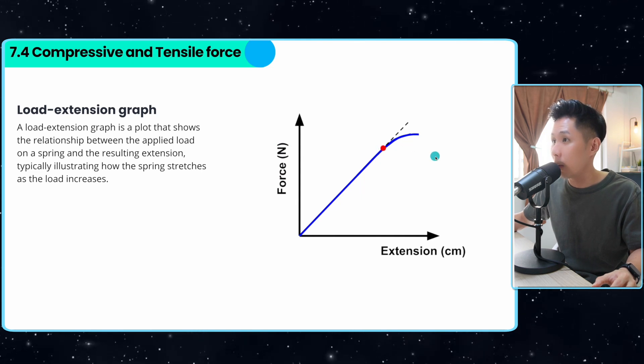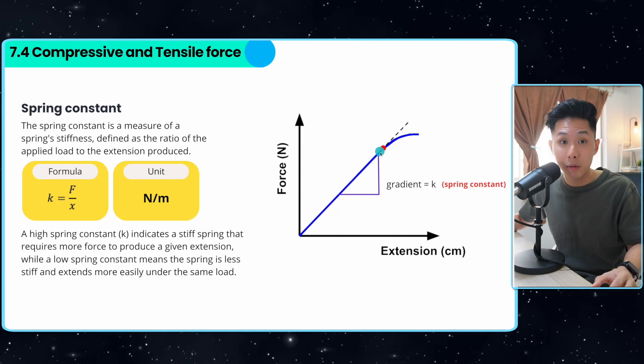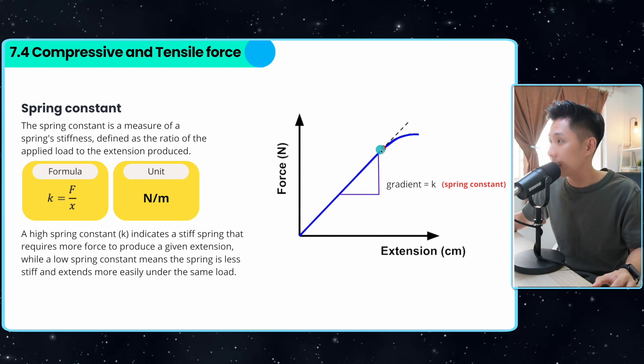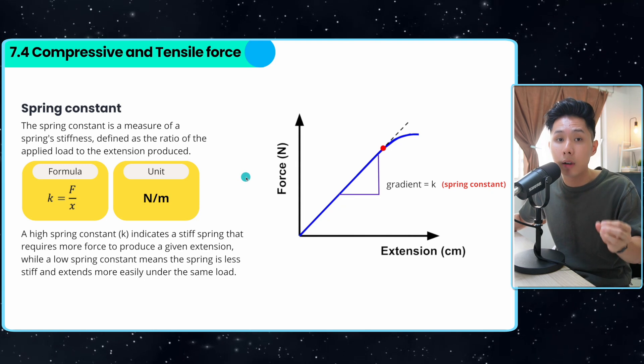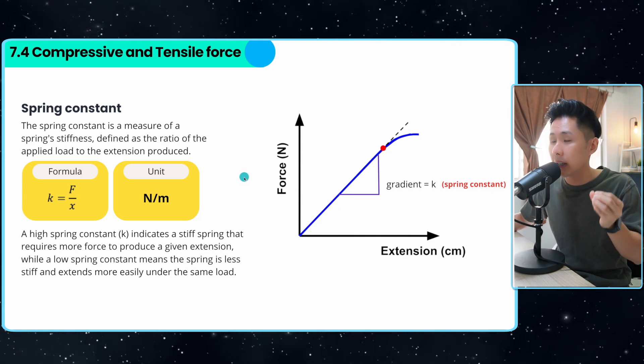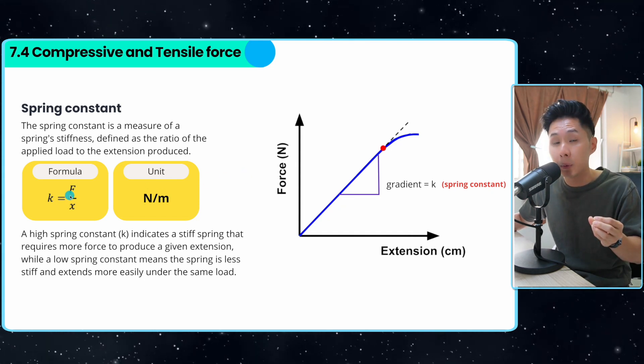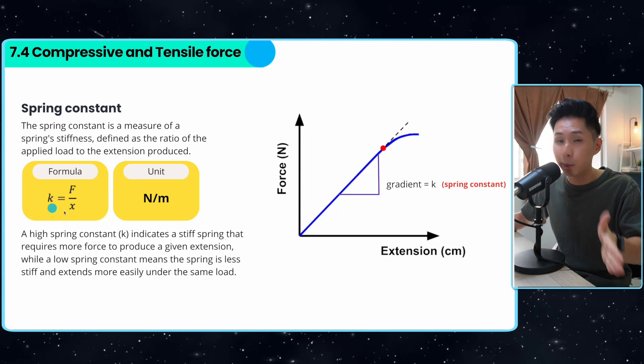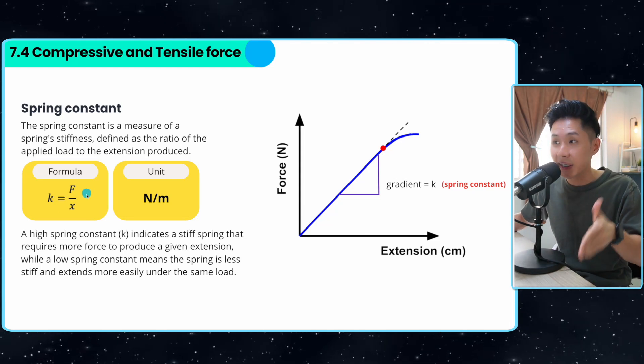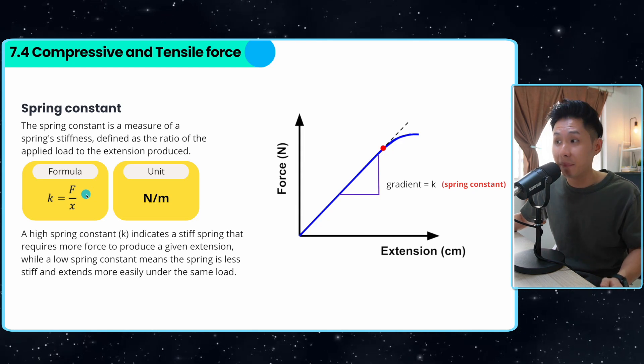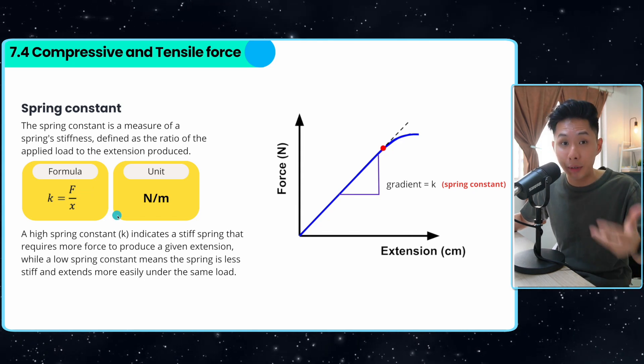What happened is that you increase the amount of load added to the spring and measure the extension and you'll get a straight line until a certain point. If you were to calculate the gradient of this graph up to this limit here, you would have gotten a spring constant. Spring constant is a measure of how stiff the spring is. It can be calculated using the formula F divided by x. If the spring constant is high, it means that you need to use a lot of force to extend the spring by 1 cm. So it means that the spring is a lot stiffer.